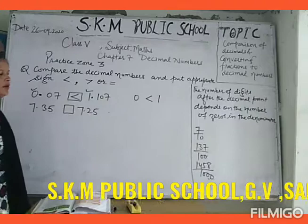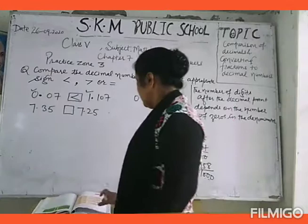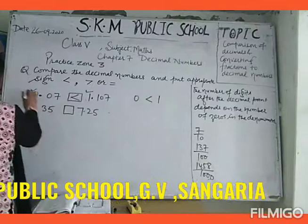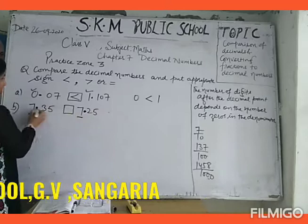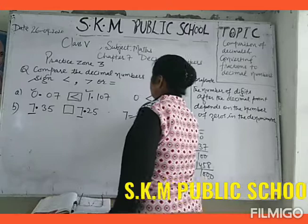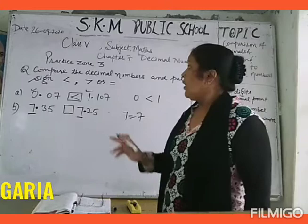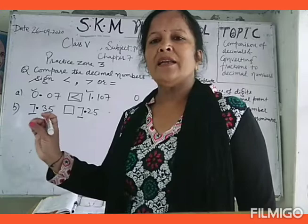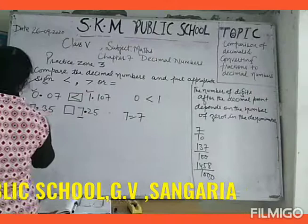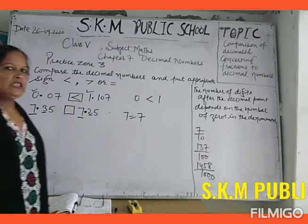Similarly, in the second part (b part), compare both whole numbers before the decimal. Here 7 is equal to 7, so we can't say both numbers are equal. Now after the decimal, compare the digits at the tenth place. The digit in the first decimal number after the decimal at the tenth place is 3.